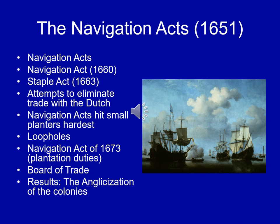The first Navigation Act was passed in 1651 under the Rump Parliament, under Oliver Cromwell, and it gave Parliament authority to regulate British trade. That law got overturned when the Restoration began in 1660, but the Navigation Act of 1660 was probably the most important piece of parliamentary legislation passed in the era prior to the Seven Years' War. It stated that if you were going to trade in an English colony or colonial port, you had to have a crew that was at least 75% English, a ship built in either England or the colonies, and that certain goods of great value could only be traded with England or another English colony.